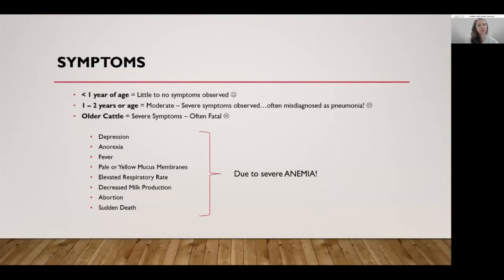The symptoms of anaplasmosis can vary depending on the age of the animal. If the calf is less than a year of age, you may not notice any symptoms at all — the calf may appear completely normal. If it's a yearling or an animal between one and two years of age, you may notice moderate to severe symptoms. However, these animals are most commonly misdiagnosed as having pneumonia.